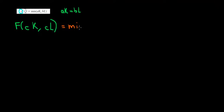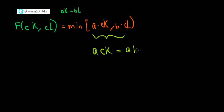We would have the minimum between a times CK and b times CL, but the same logic applies. We need them in the same proportion. We would need a times C times K must equal b times C times L.